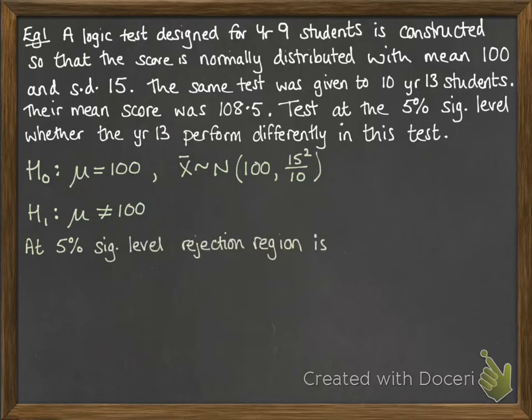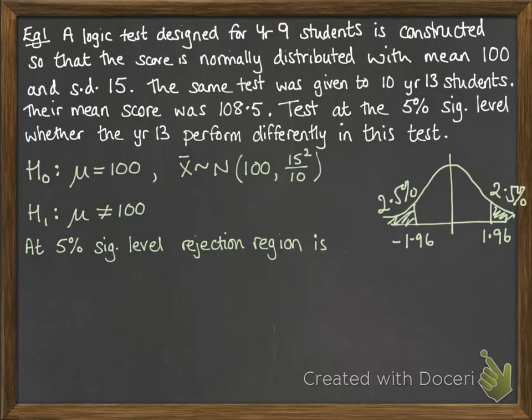At the 5% significance level, our rejection region looks like this. We have our normal distribution, 5% significance means we put 2.5% on either side, which gives us minus 1.96 and plus 1.96. So the modulus of the z value has to be greater than or equal to 1.96.